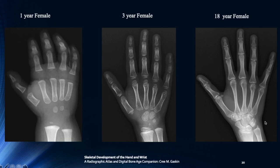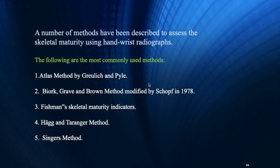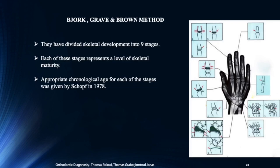Based on the appearance of different bones, different methods have been employed to assess skeletal maturity using hand wrist radiograph. The most commonly used methods are the Atlas method, the method by Jog, Gray, and Brown, Richmond's Hagg and Hanker method, and Sinker's method. We are going to discuss the Jog, Gray, and Brown method, which is one of the most commonly used methods in orthodontics.